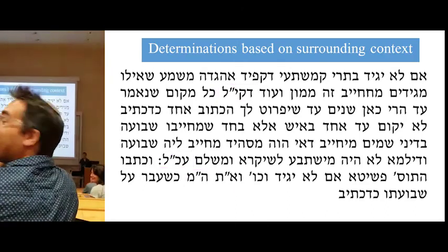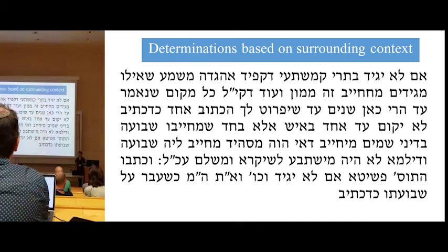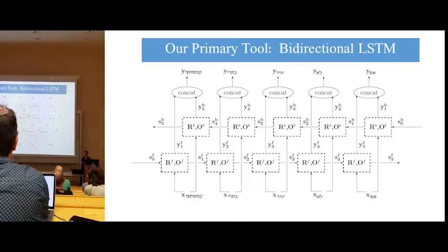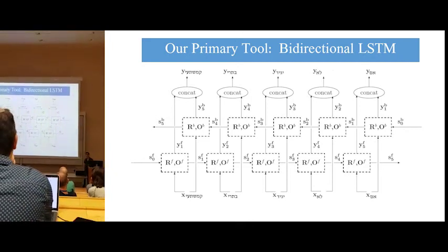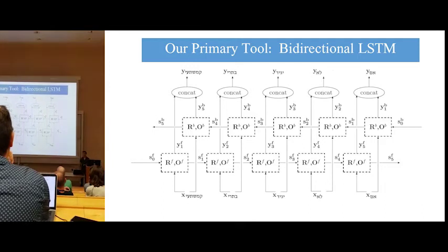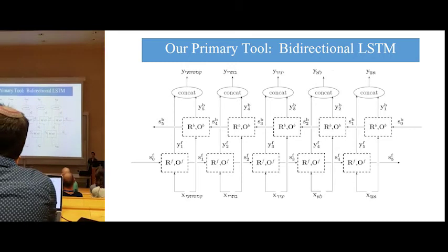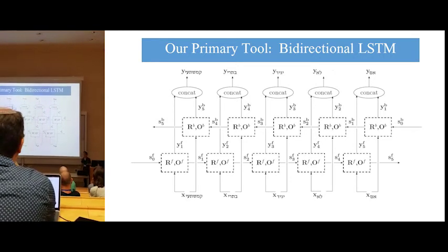The key to overcoming these challenges is to take the surrounding context into account. Our primary tool for taking the surrounding context into account is bidirectional recurrent neural networks, specifically the LSTM. The LSTM is based on a gated architecture, and has been shown in recent studies to achieve great results when processing sequences of data of arbitrary length.